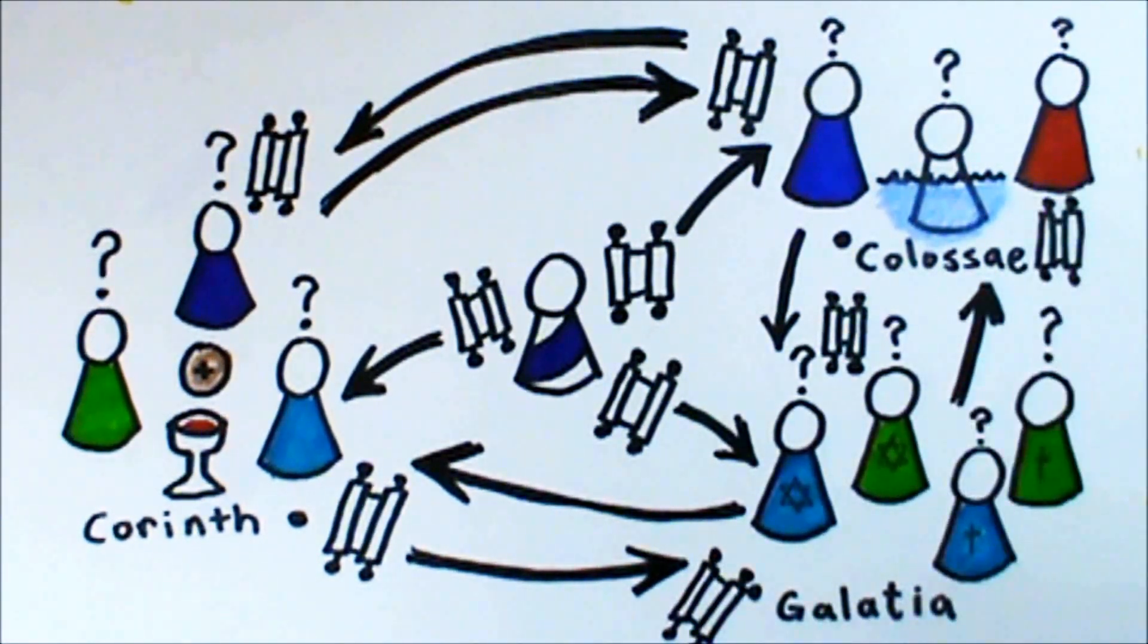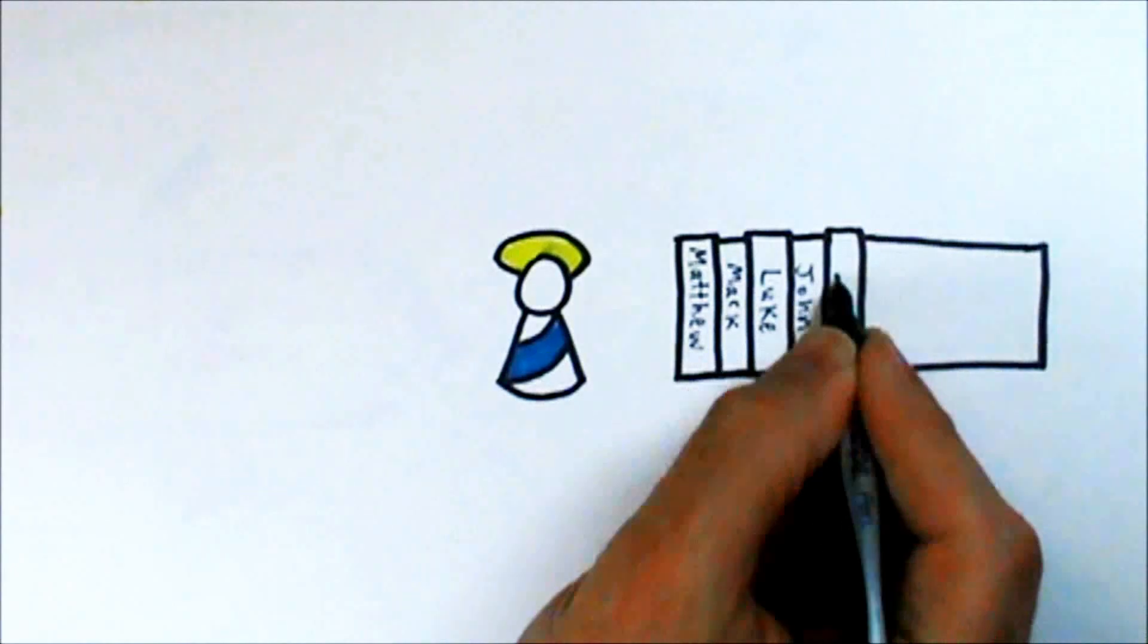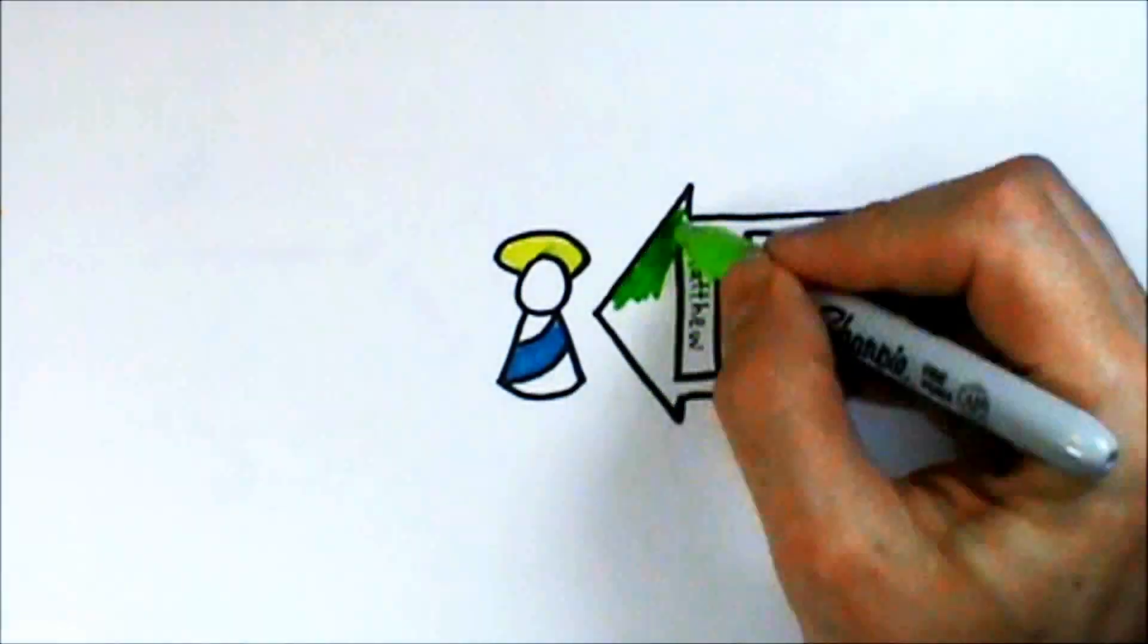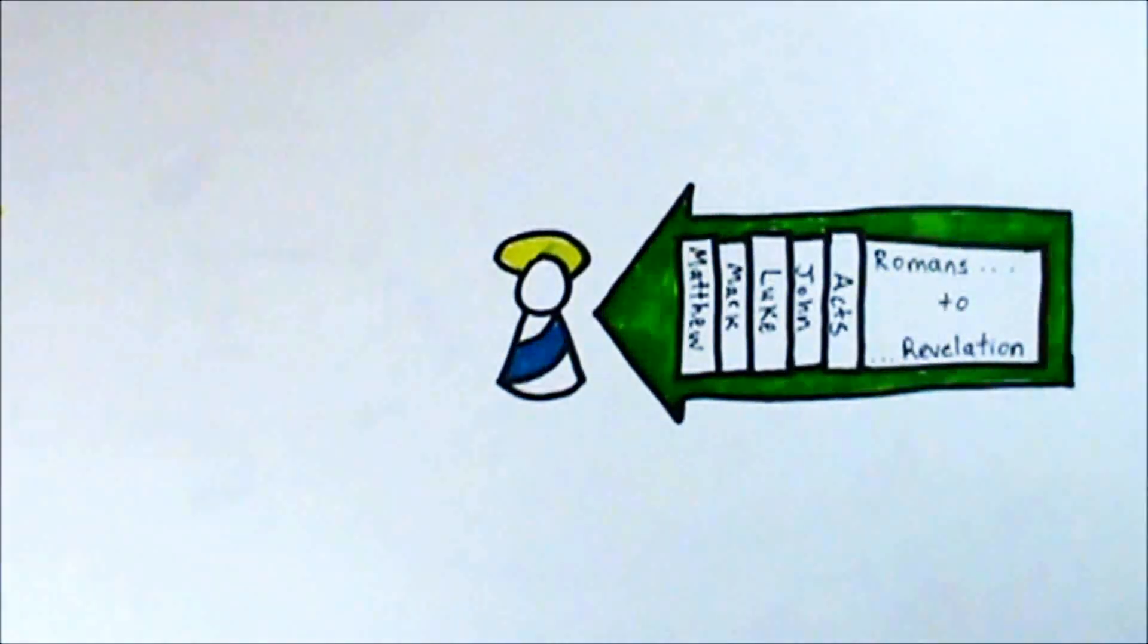After a number of generations, a bunch of these letters were in circulation, along with a number of documents telling the story of Jesus. So church leaders decided it would be a good idea to identify which writings were historical and reliable, and authentic writings about Jesus—which books, that is, belonged in the canon.